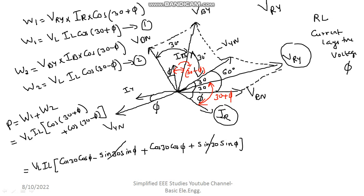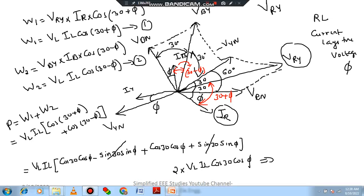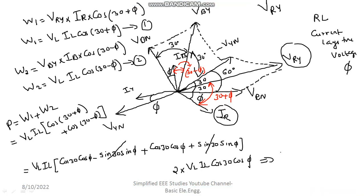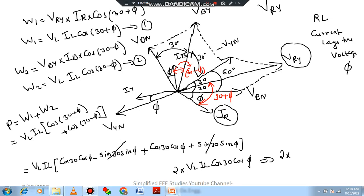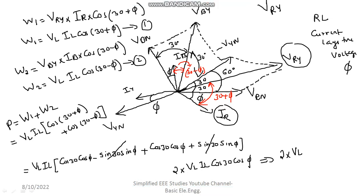So it becomes 2 into VLIL into cos 30 cos φ. That is nothing but, you can elaborate, 2 into VLIL into root 3 by 2 into cos φ. That is nothing but root 3 VLIL cos φ. So, the power consumed by the three phase load is root 3 VLIL cos φ. In this video you have learned how to attach.